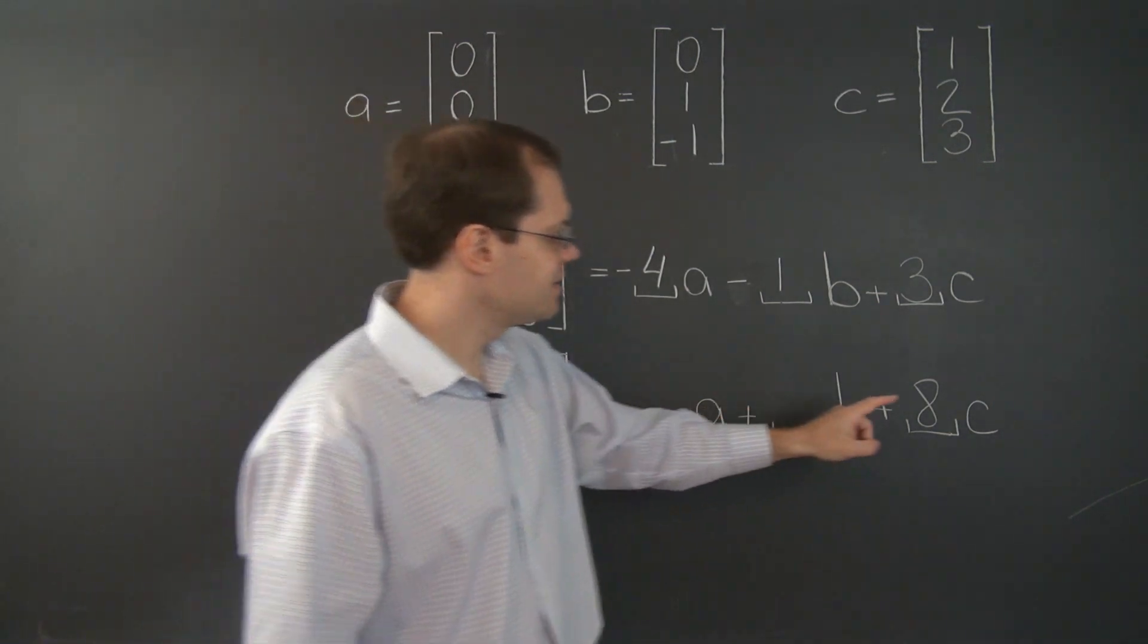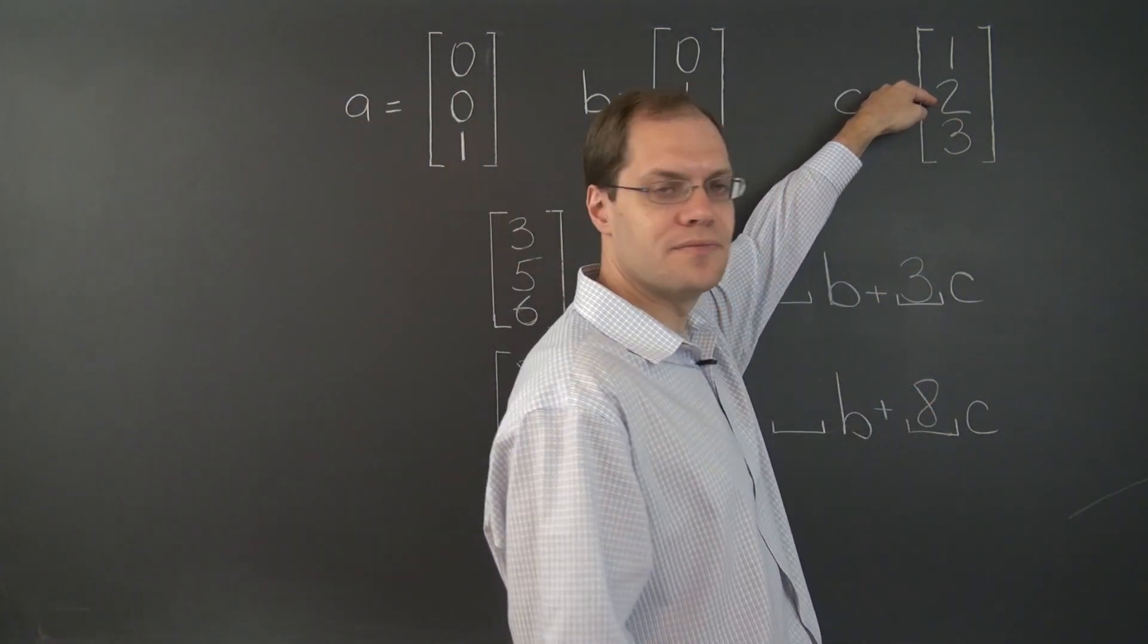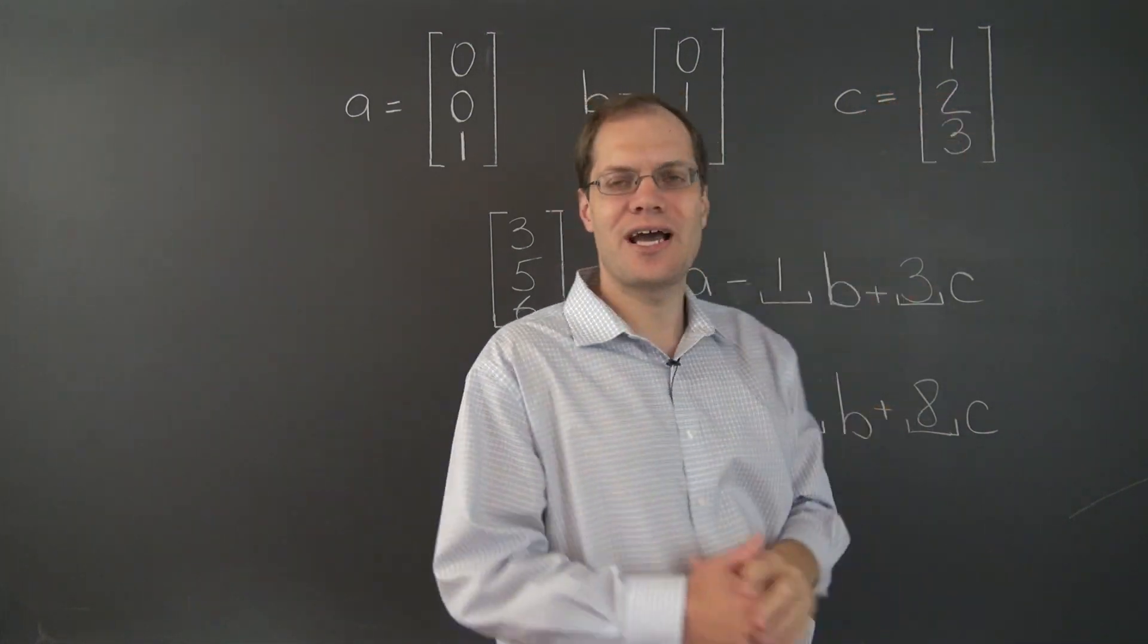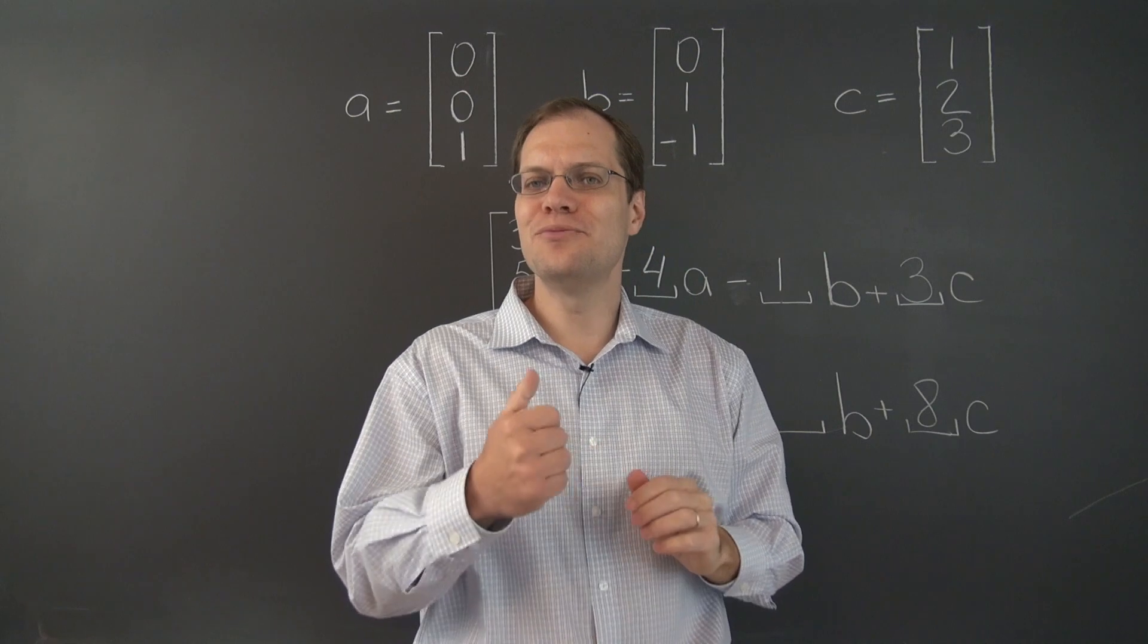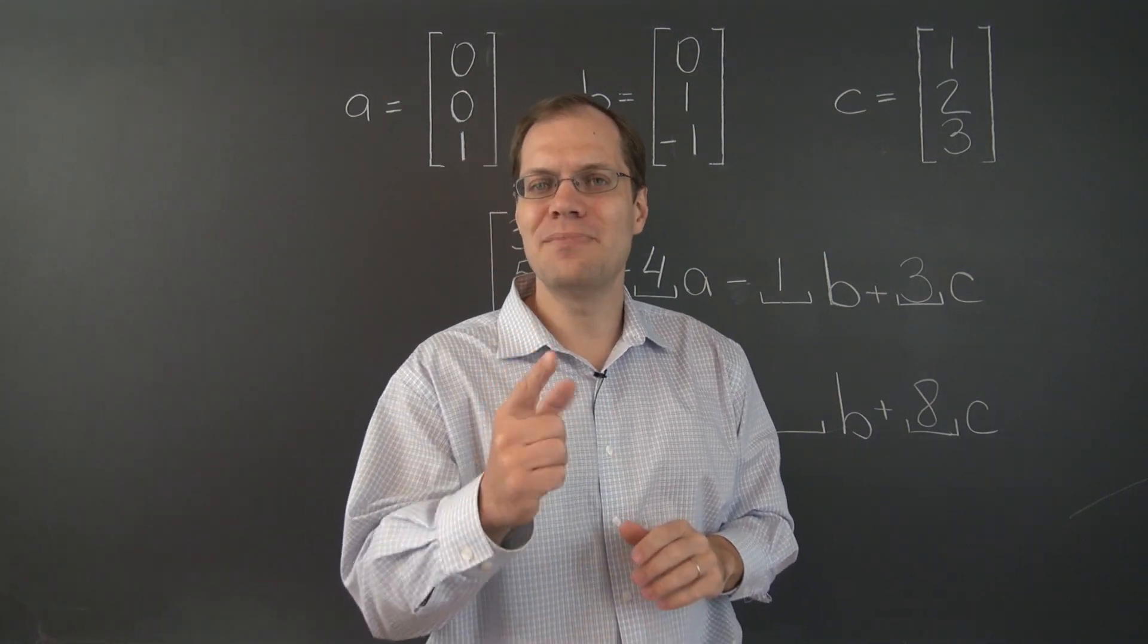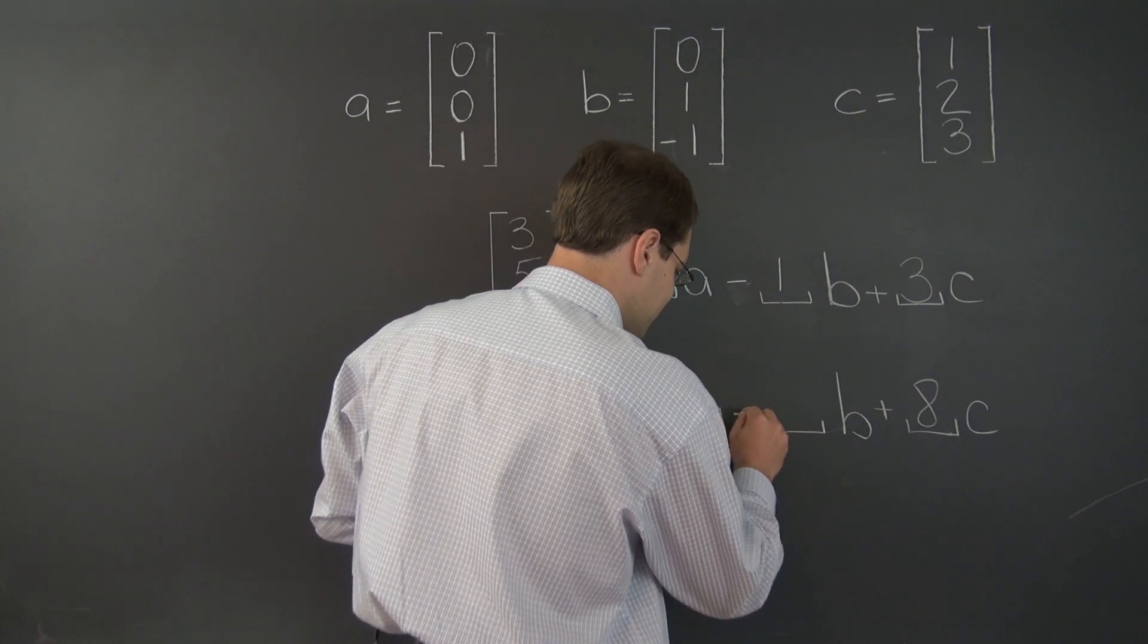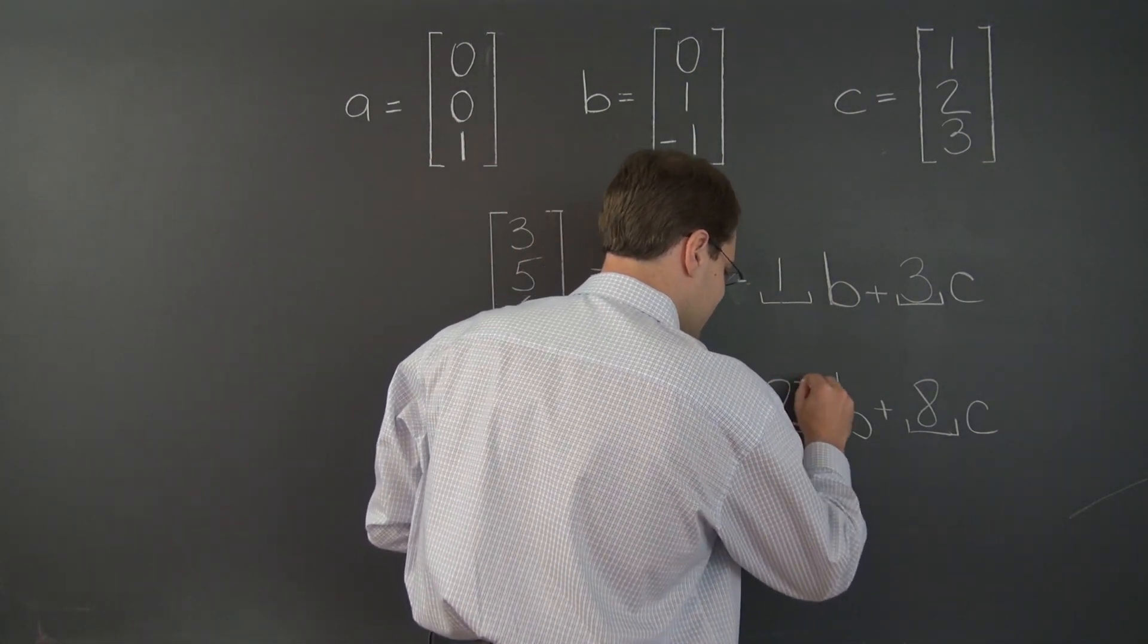So we have to get to minus eleven. And we're currently at eight times two in the second entry. So we're at sixteen. And we have to go from sixteen to minus eleven. That's minus twenty-seven of B that we need to take. Minus twenty-seven of B.